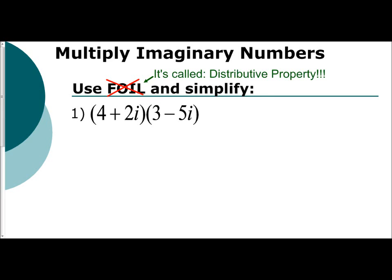In this video, we're going to look at how we multiply imaginary numbers together. Now remember, we still need to keep in mind that i is the square root of negative 1, i squared is negative 1, i cubed is negative i, and i to the fourth is 1. So that cycle of 4 with imaginary numbers — that pattern — we still need to use and apply here.